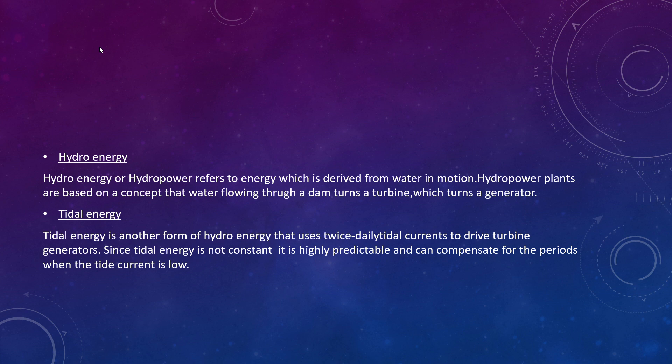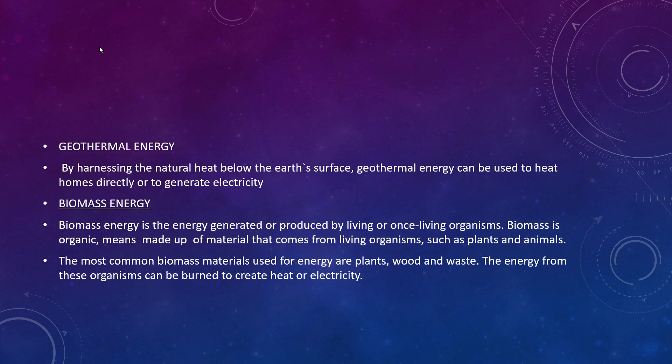Tidal energy: tides are waves caused due to the gravitational pull of the moon and sun. During high tide, water flows into the dam, and during low tide, water flows out, which results in the movement of the turbines to generate electricity.